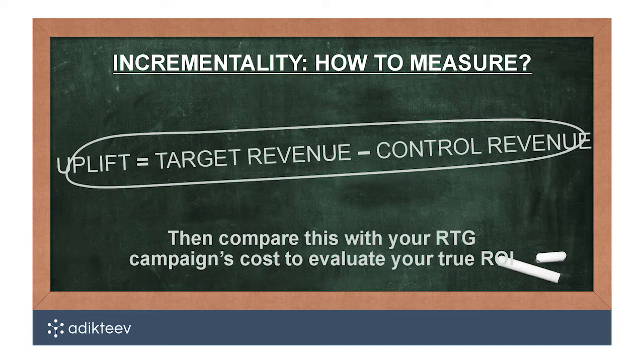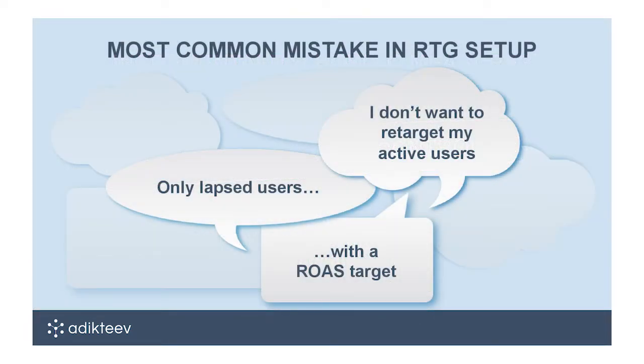One of the misconceptions I hear a lot is: 'I don't want to retarget my active users. I want to wait seven days — give them a chance to perform by themselves — and then when I see they're not performing, I start a retargeting campaign.' That means waiting one day, seven days, or 30 days, maybe focusing only on lapsed users — basically waiting a good amount of time, giving them a chance to perform on their own, and only then starting to retarget them.